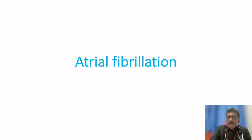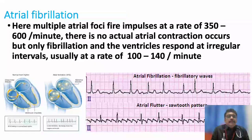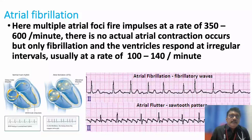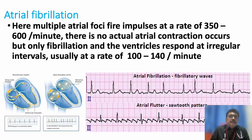We may have learned in our MBBS stage that atrial fibrillation is an irregularly irregular rhythm. Normally, when the heart produces impulses from the SA node, one impulse goes to the AV node and is conducted to the ventricle. So one P wave from the atria produces one QRS complex from the ventricle, and this QRS complex comes regularly — that is sinus rhythm.